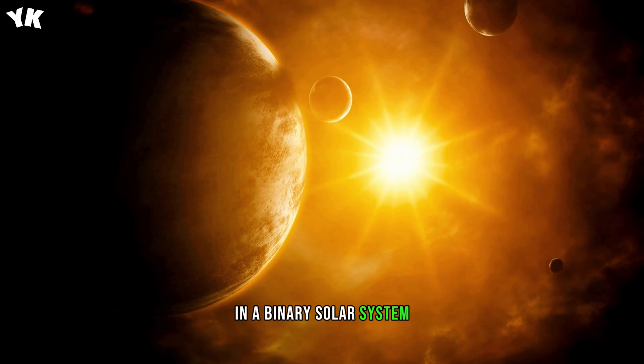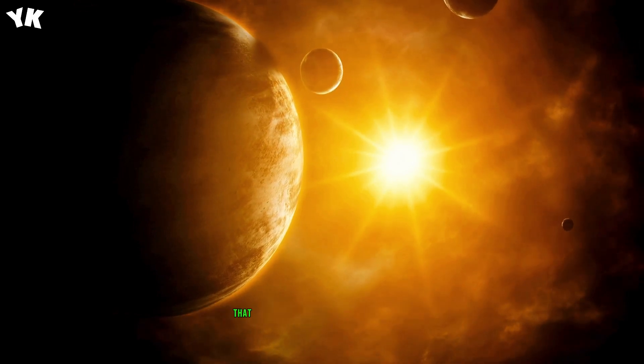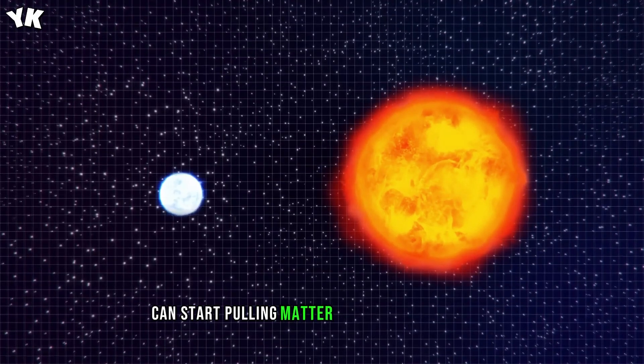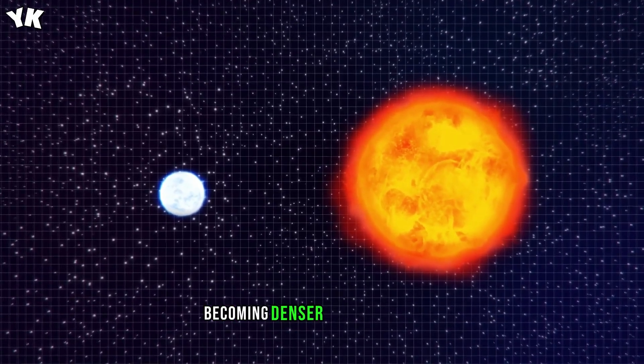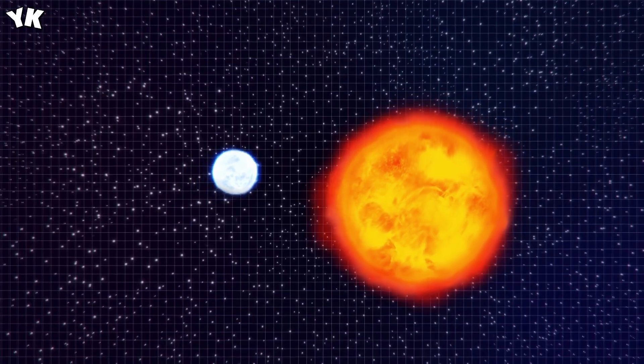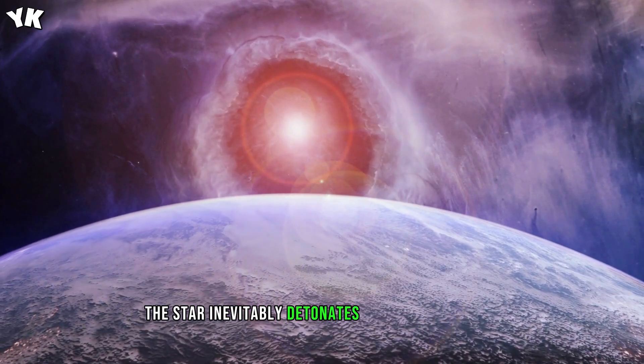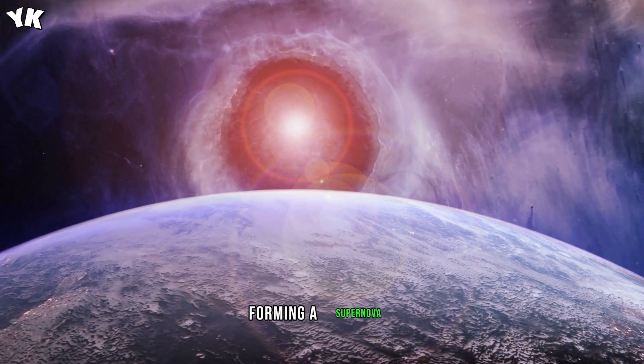In a binary solar system where two stars are so close together that they orbit each other, one carbon-oxygen white dwarf can start pulling matter from its brother star, becoming denser as mass piles up. When it exceeds a critical point of density, the star inevitably detonates in a fantastic bang, forming a supernova.